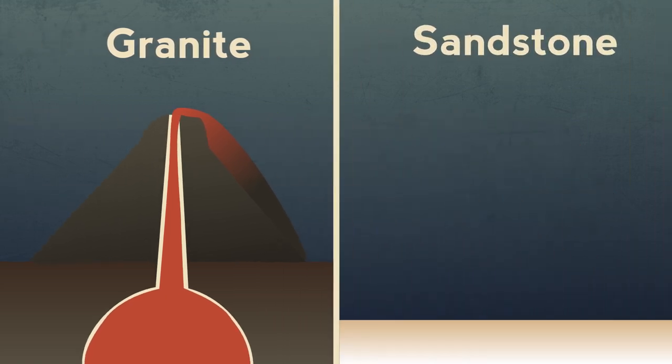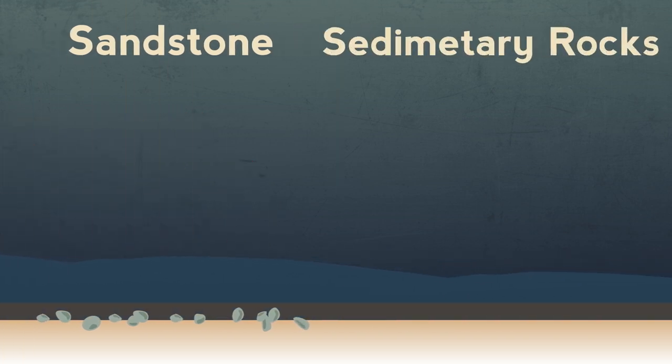But sandstone was made by bits of other rock carried by rivers to the sea. The bits get smoothed and rounded like the pebbles on a beach. These grains settle on the seabed forming sedimentary rocks.